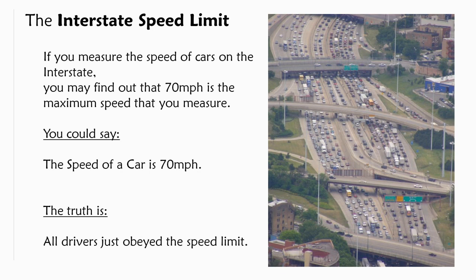And to give you an easy example out of everyday life you could go and measure the speed of cars on the interstate and the result might be a maximum speed of 70 miles per hour that you measure. With this result you could say the speed of a car is 70 miles per hour but of course the truth is that all drivers just obey the speed limit which happens from time to time.